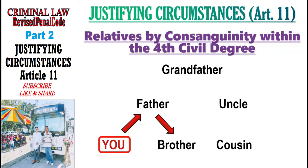How about your uncle? Find the nearest common ancestor — that is your grandfather. From you to your father is first degree, father to grandfather is second degree, and grandfather to your uncle is third degree. How about your cousin? The nearest common ancestor is also the grandfather. From you to your father is first, to grandfather is second, down to your uncle is third, and to your cousin is fourth. Your cousin is your fourth civil degree relative by Consanguinity.